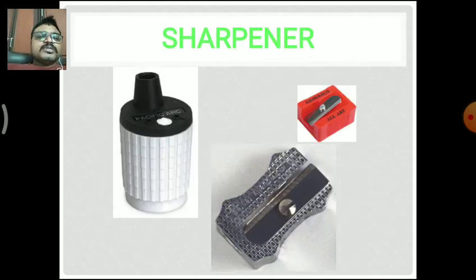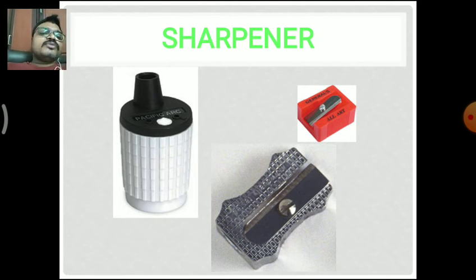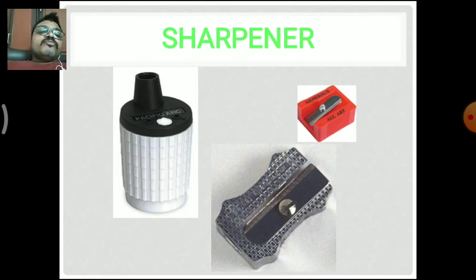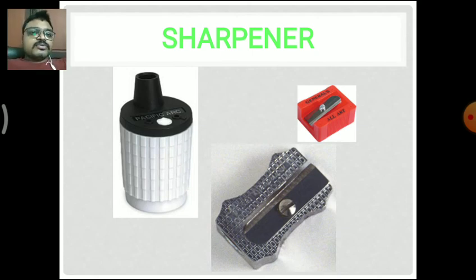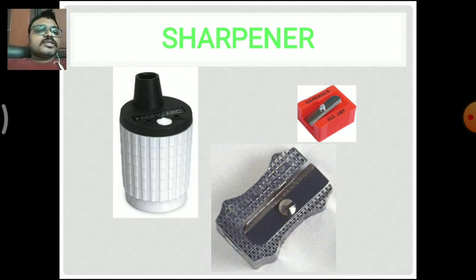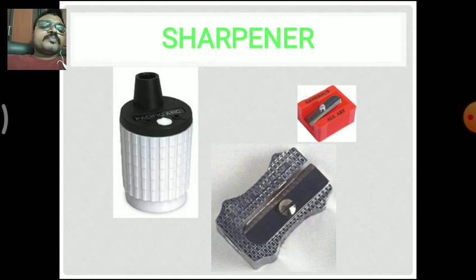Next is the sharpener. Different types of sharpeners are used for sharpening pencils. In the olden days, iron-made sharpeners were used. Nowadays there are sharpeners in different templates — shaped like dustbins, cars, etc. — to attract small children. The plastic sharpener is at the top right corner, but all sharpeners have the same function: to sharpen the pencil.